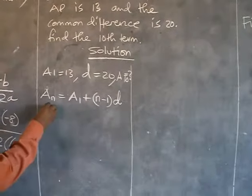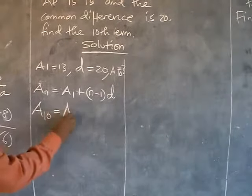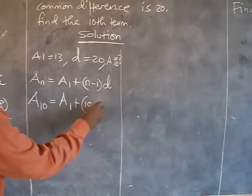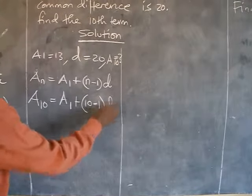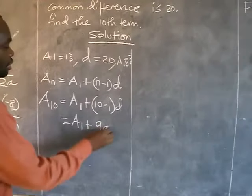So if we have A10, it means it will be A10 equals A1 plus (10-1)D. Therefore, for A10 it will be A1 plus 9D.